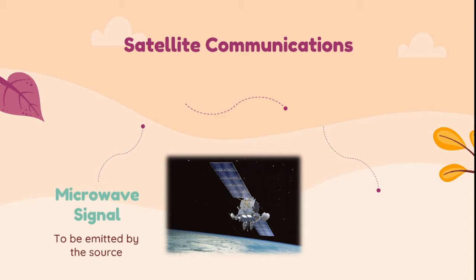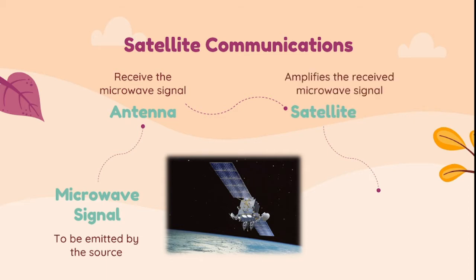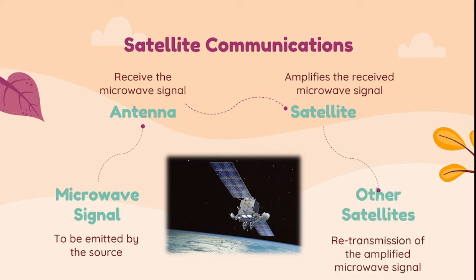Using satellite communications, a microwave signal is emitted by a source, transferring to the antenna which receives the signal. From the antenna, the satellite will amplify the received microwave signal, and it is then ready for retransmission of the amplified microwave signal to other satellites.